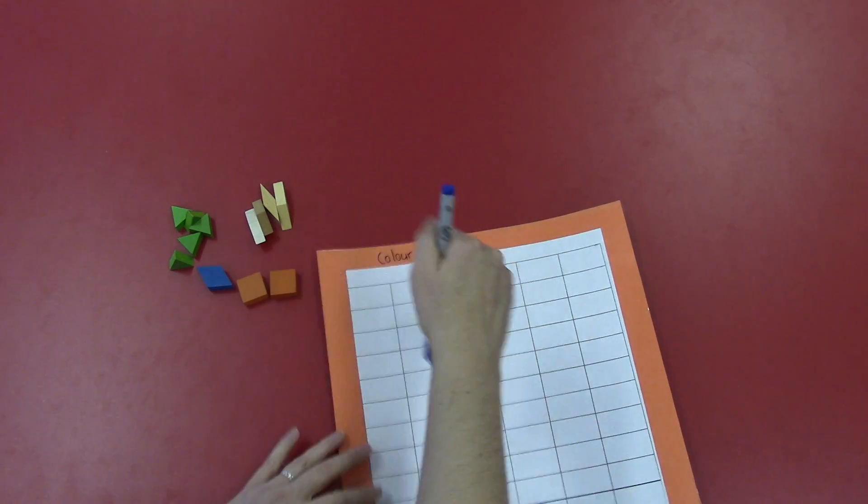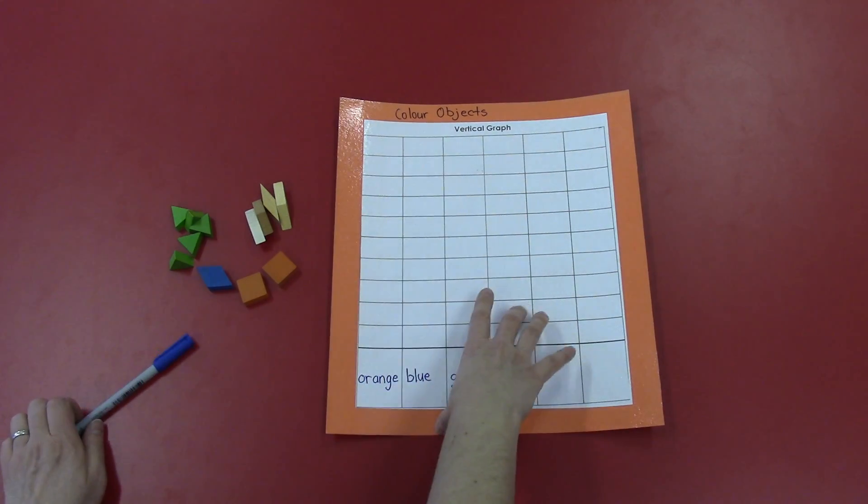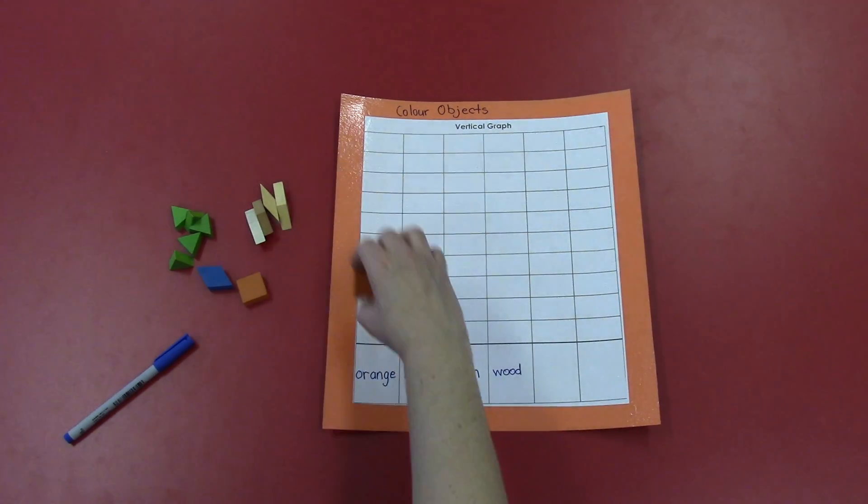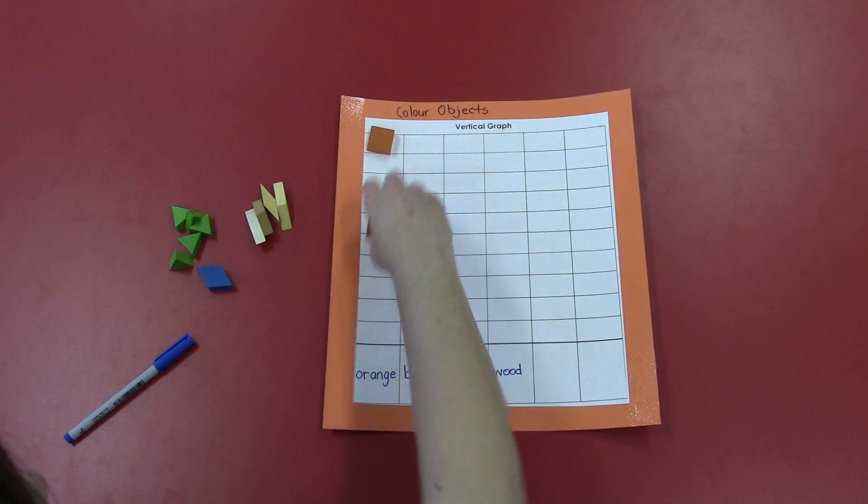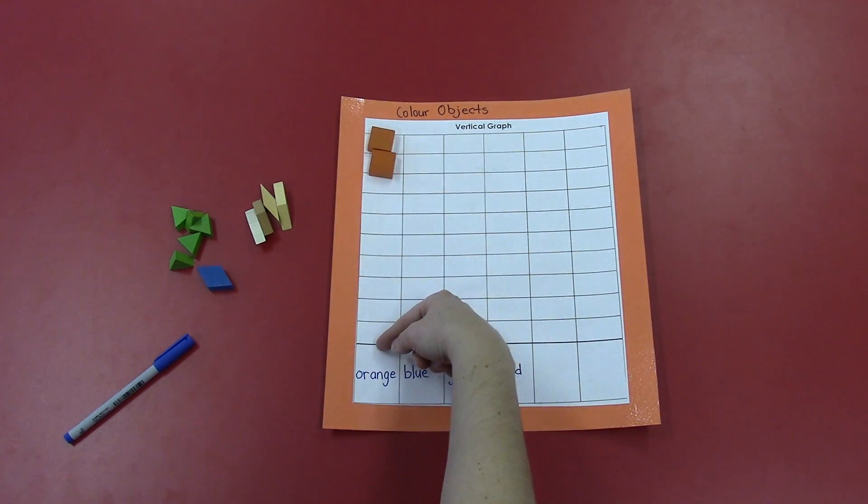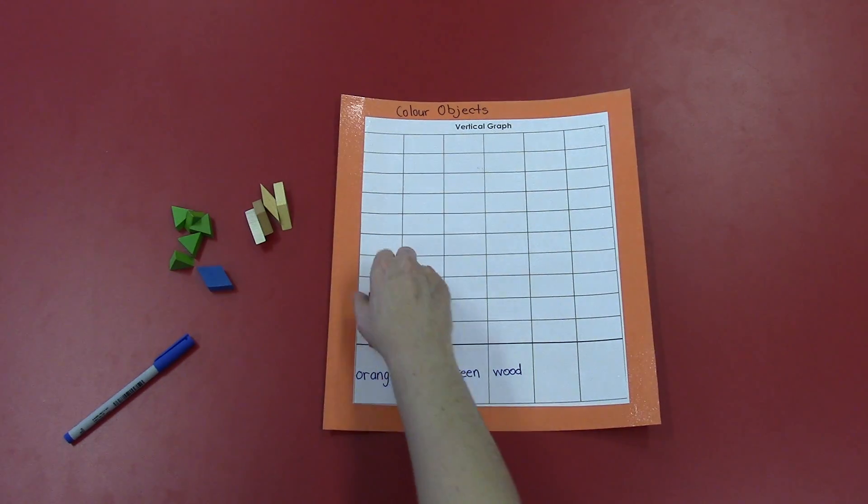Now that I have my title and my labels done, I can start graphing. So I'm going to put one object in each space. It's important that you start right next to the label. Notice how I did not start my graph at the top. I'm starting on a vertical graph. I go from bottom up and I can't skip spots. They go right after one another.